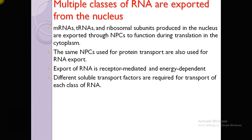Multiple classes of RNA are exported from the nucleus — messenger RNA, tRNA, and ribosomal subunits 60S and 40S — all produced in the nucleus and exported through nuclear pore complexes to function during translation in the cytoplasm. The same NPCs used for protein transport are also used for RNA export. RNA export is receptor-mediated, and different energy-dependent soluble transport factors are required for each class of RNA.